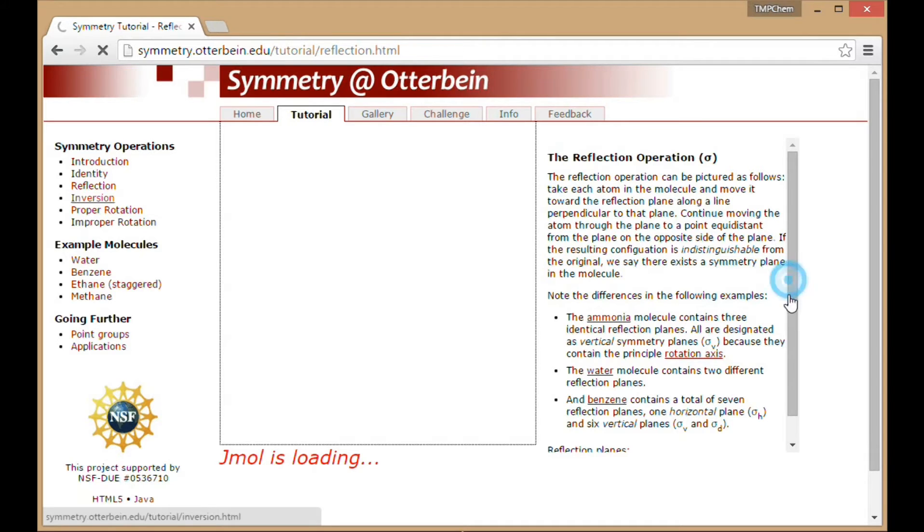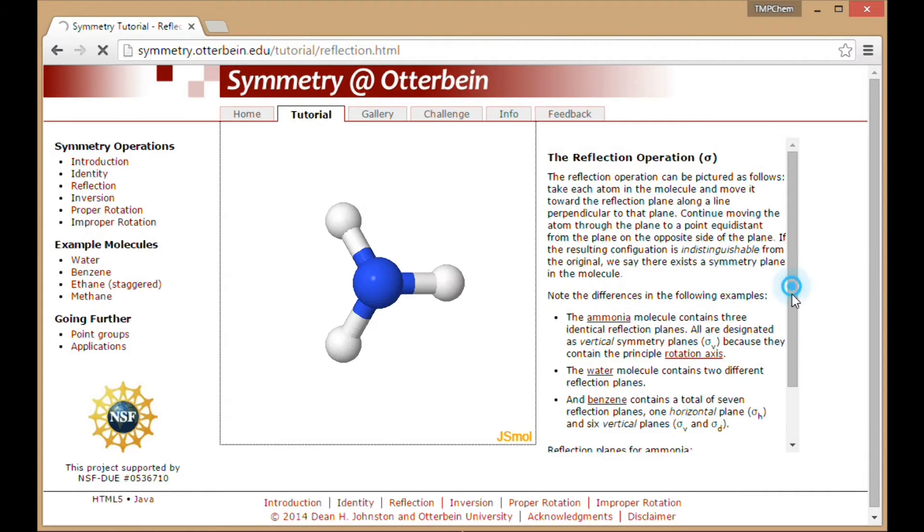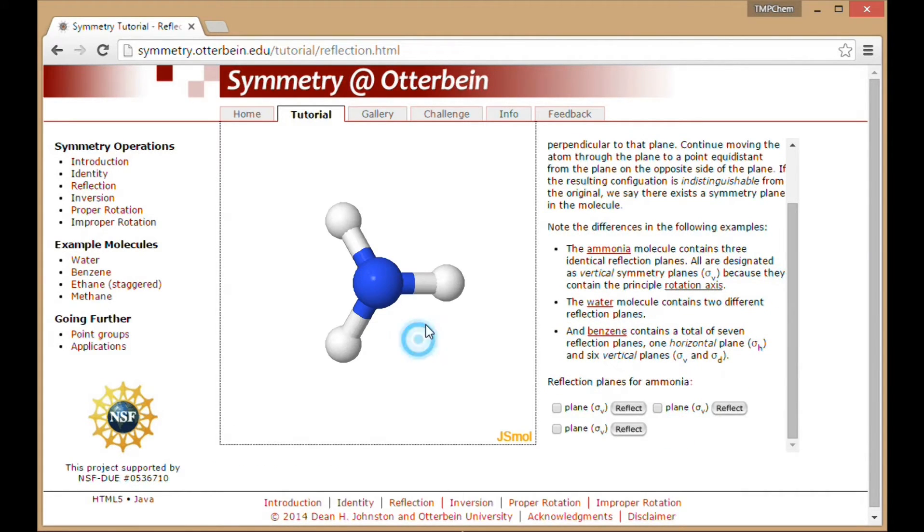If this molecule can load up here. This is ammonia. Ammonia has three planes of reflection going through each of the hydrogen atoms there. So if I select this one, you can see it brings up one of the mirror planes. And if I take the operation, this one is on the mirror plane, it remains unchanged. And these other two reflect through the plane. You can see that operation there.